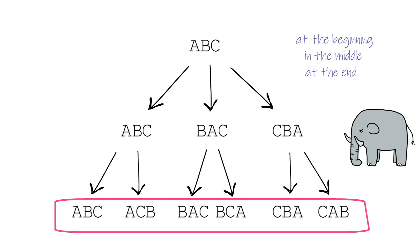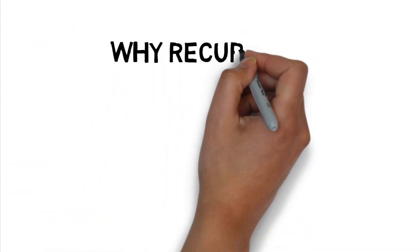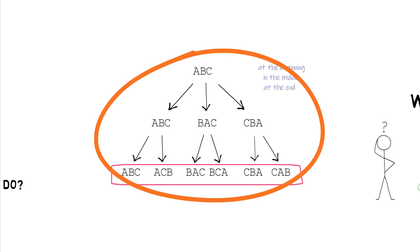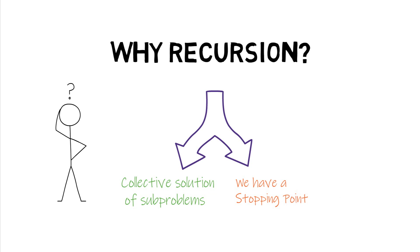But why is this problem eligible for a recursive solution? First, the solution of the main problem is the collective solutions of its sub-problems. In the algorithm, we begin at the first character, then we generate all the permutations from swapping that character with itself and with the following characters. Then we shift to the next character and do exactly the same thing. So we are doing the same thing every time, with the exception that we shift to the next character every cycle. And the results of these, when put together, form our solution. Second, we have a stopping point — it is when we reach the end of the string. Recursion is a muscle; the more you train it, the easier it will be for you to sense the pattern within the solution.